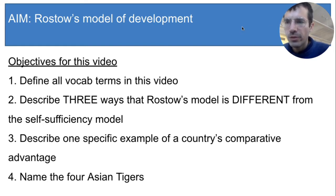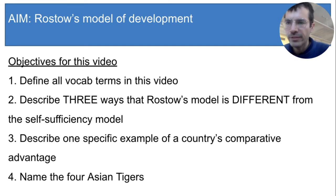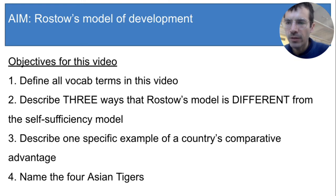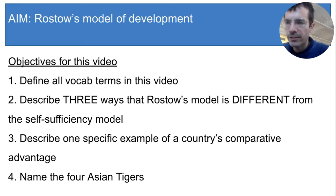In the last lesson, you looked at the question of how can a poor, less developed country become wealthy and developed? You learned about one approach called the self-sufficiency model of development. That model said that countries should have a lot of government involvement in the economy, keep foreign products out, and encourage people to buy domestic goods.